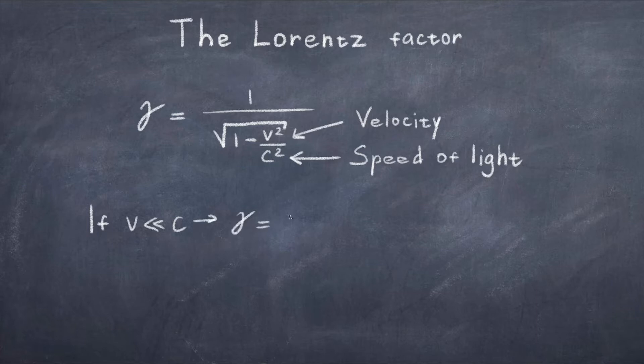Secondly, if the velocity is the speed of light, thus v equal to c, then you get division by zero. This is because massive particles can never move at the speed of light. Only massless particles can travel at the speed of light, and they always travel at the speed of light.